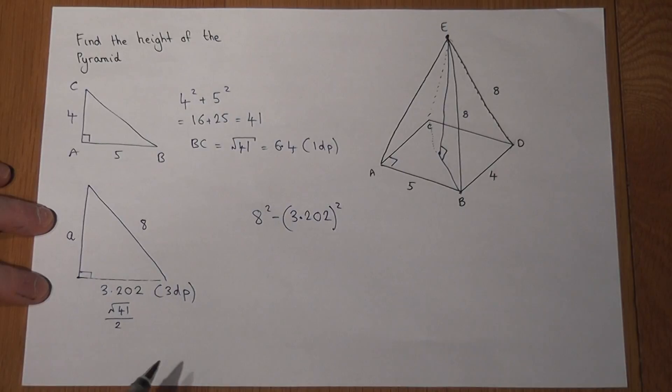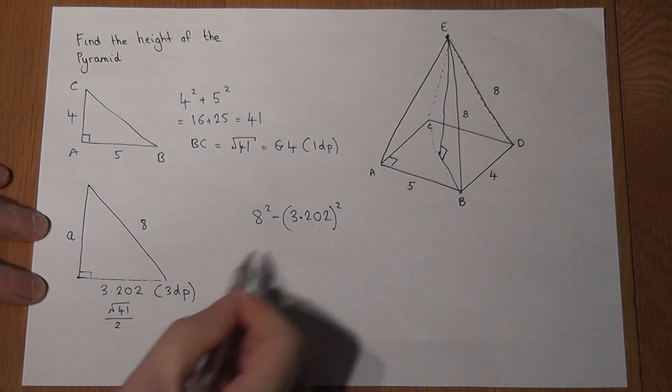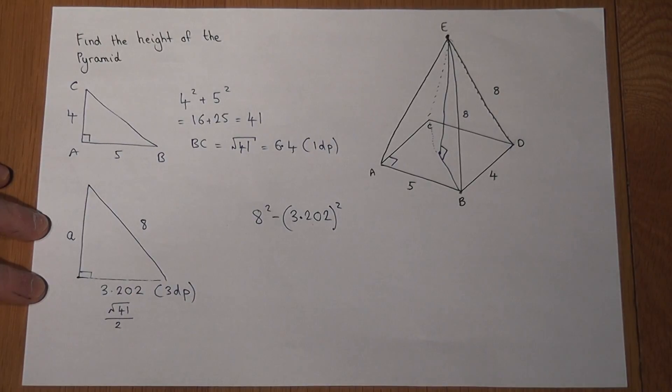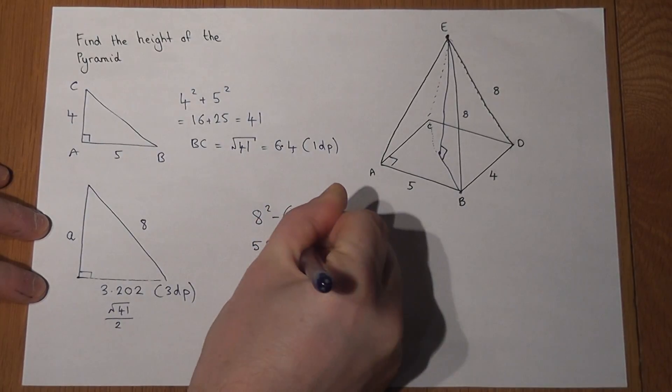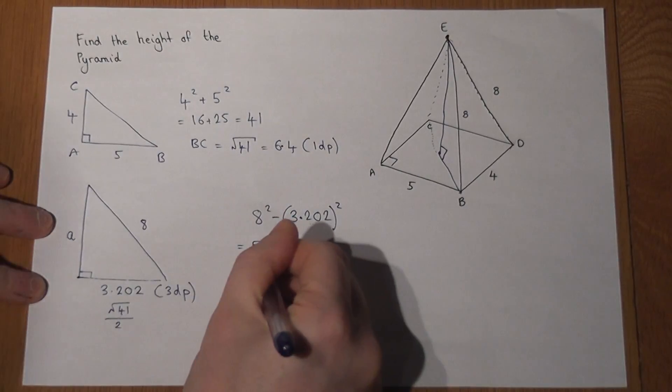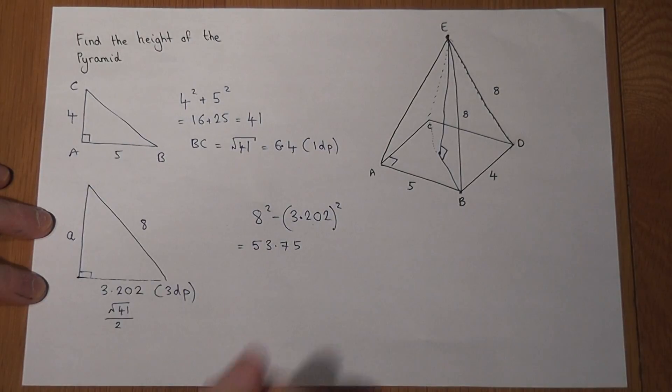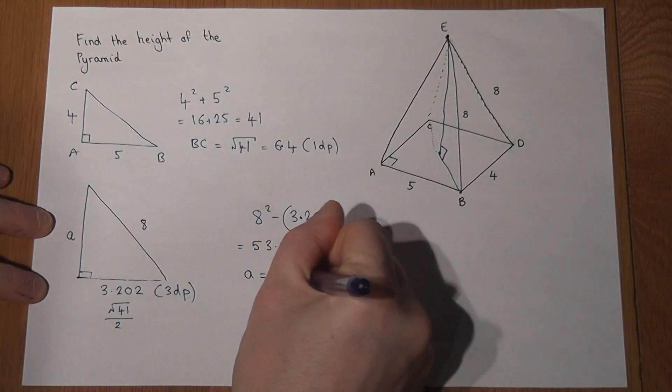However, the key thing here is to use the accurate number from before, not the rounded decimal. So I'll do h squared take away this answer squared. And then from this, I get 53.75.